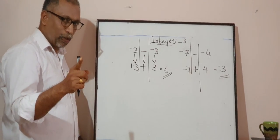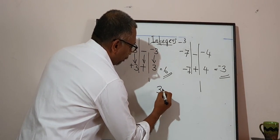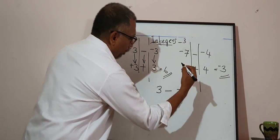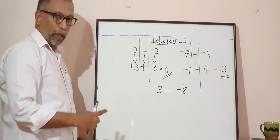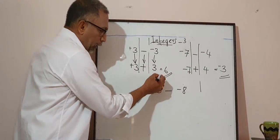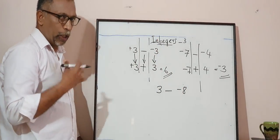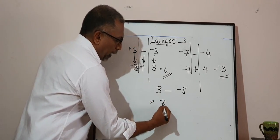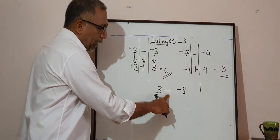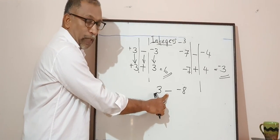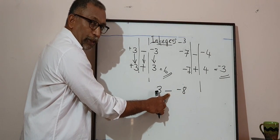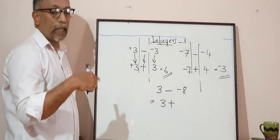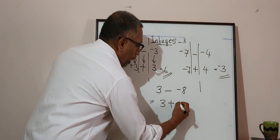One more example — listen carefully: 3 minus negative 8. The first step: write the first number as itself, so 3 stays as 3, no change. The minus sign — this is the subtraction sign, not the sign of 8 — becomes a plus sign. The negative sign of the 8 changes: negative 8 becomes positive 8.